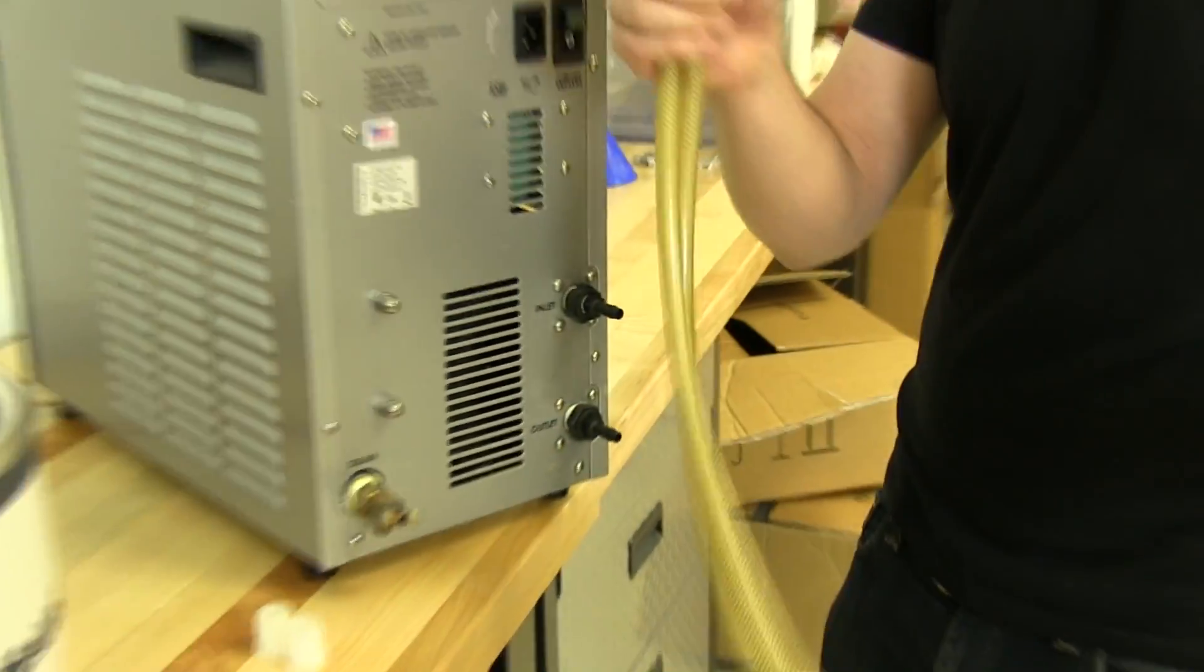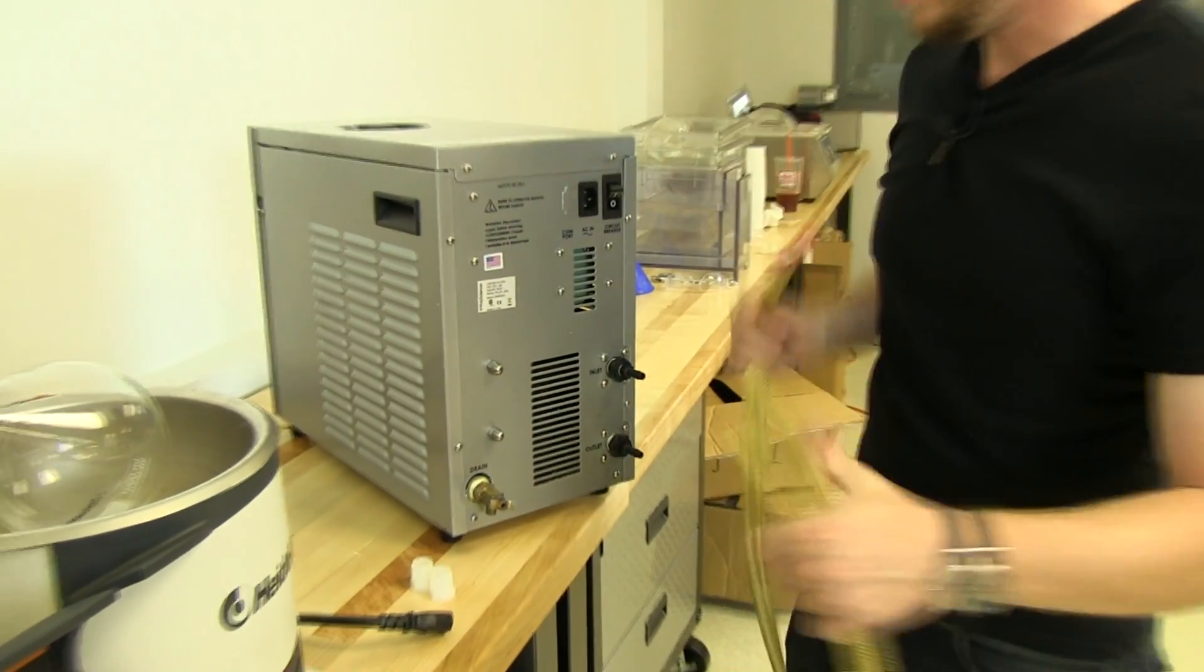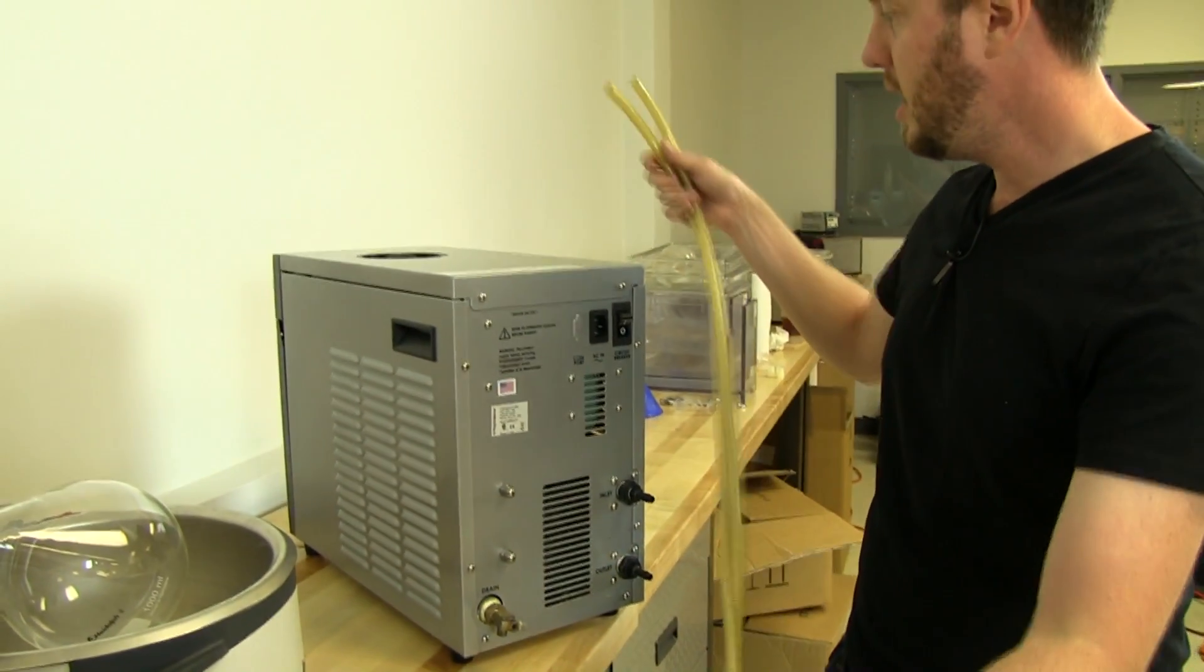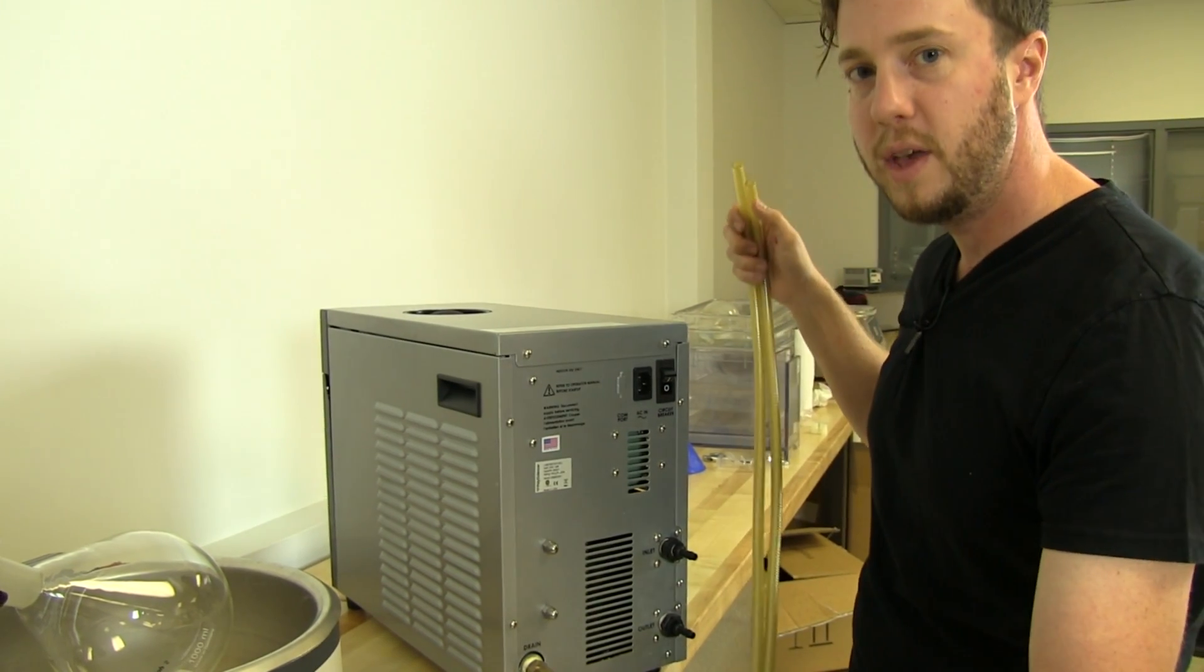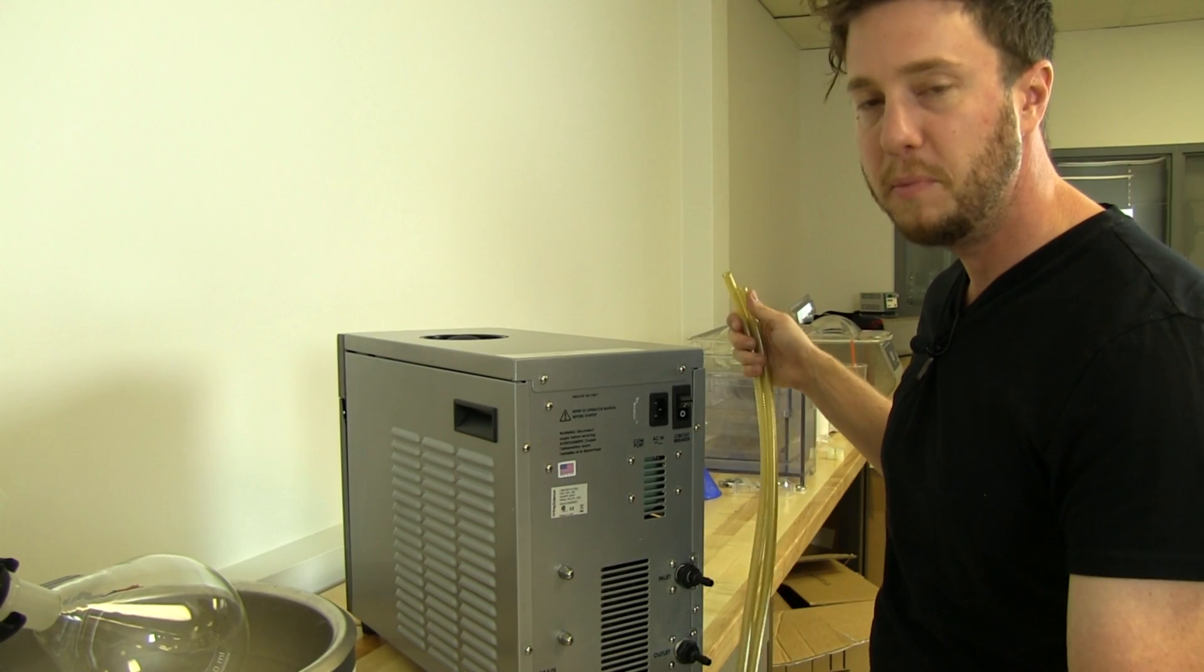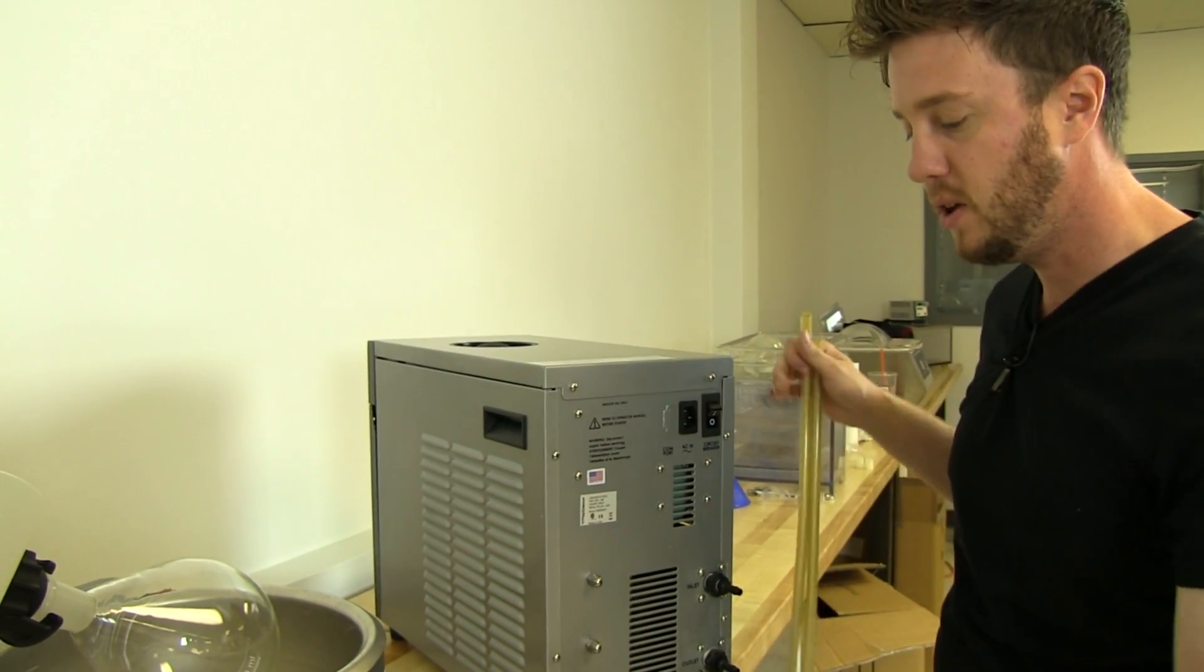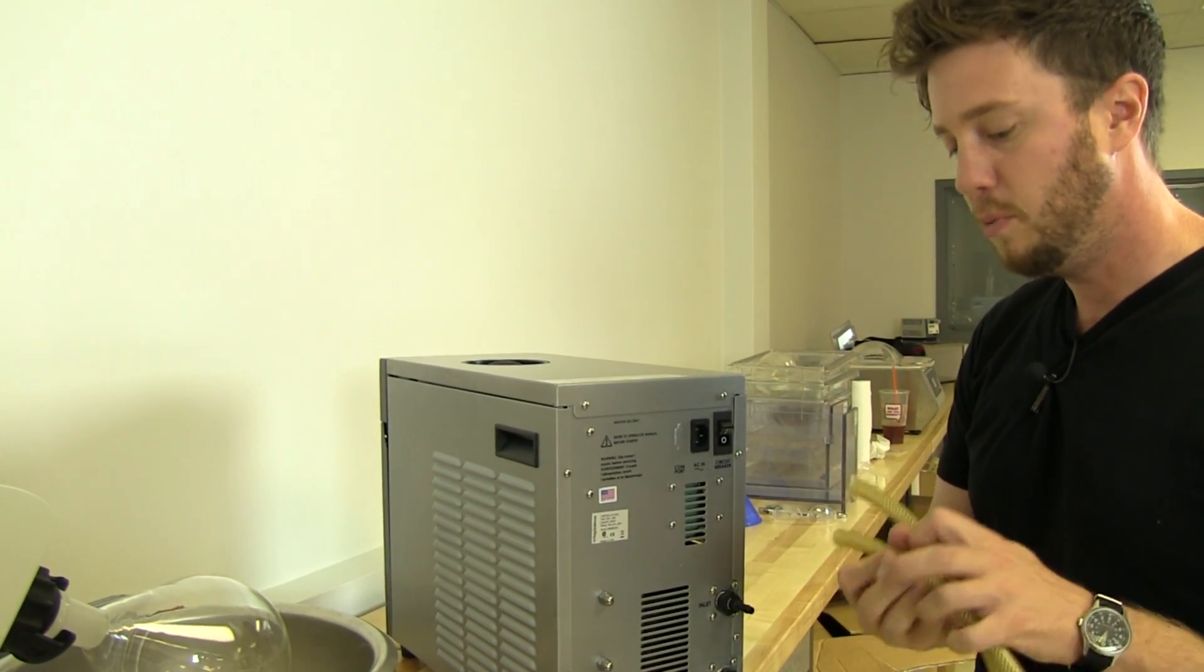We have our chiller tubing, cut to equal lengths, and we're going to connect either one. You don't want to have this more than a meter or so, or a couple meters, so the chilling process is much more efficient. If you have a great length, it really slows down the whole process.